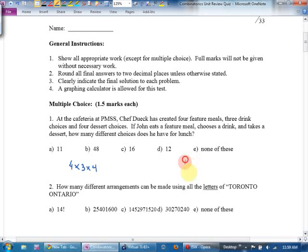At the cafeteria at PMSS, Chef Duik has created four feature meals, three drink choices, and four dessert choices. I think it's going to be four times three times four. By the way, I noticed some of you on the quiz did this. You said meals. There's four of them. Drinks. There's three of them. Dessert, there's three of them. And you went four choose one, three choose one, three choose one, which I guess also works, because it is four times three times four, and you're choosing. You know what? It's way easier, I think, just to do fundamental counting principle for those first ones.